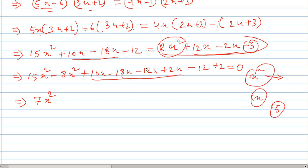So minus 8x minus 12x is minus 20. So minus 20 plus 2 is minus 18x. So: 10x minus 18x minus 12x plus 2x.